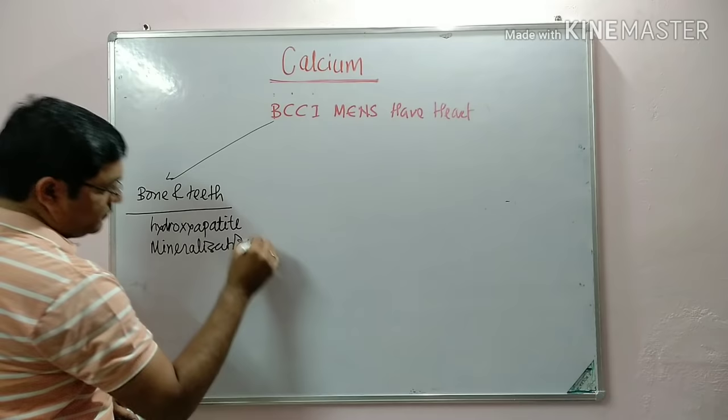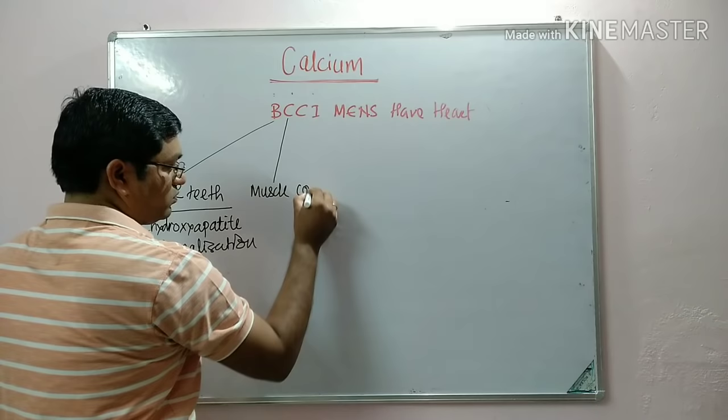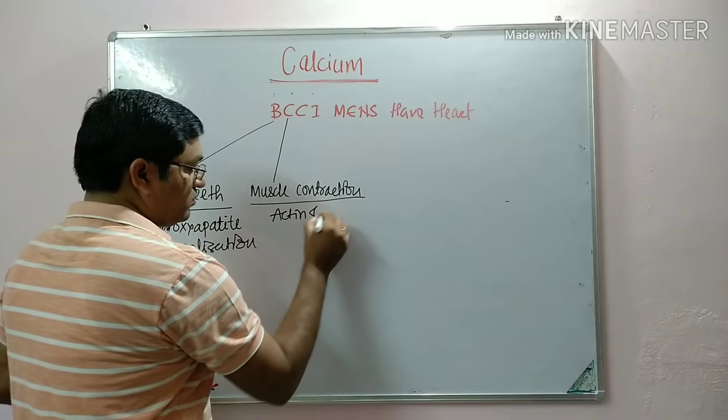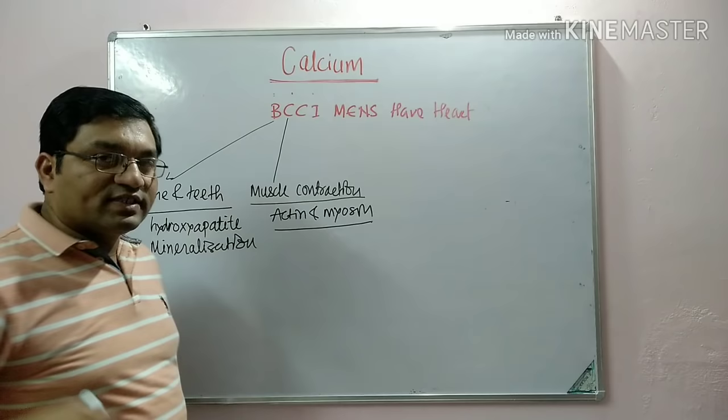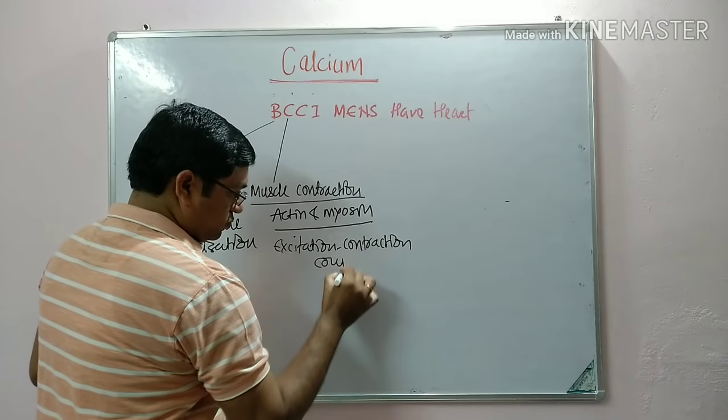The second function: calcium is important in muscle contraction. It increases the action of actin and myosin. It is required for, or facilitates, excitation-contraction coupling. So calcium is important in muscle contraction.